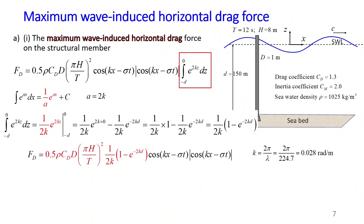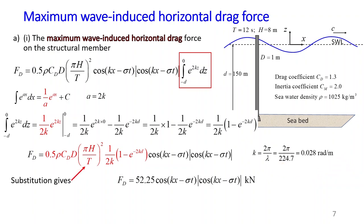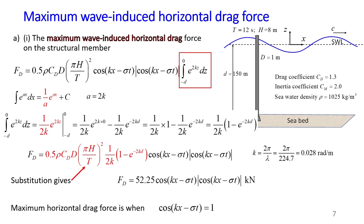We now substitute all constant values: drag coefficient, diameter, density, and so on. We also calculate the wave number k = 2π/λ. Therefore, our drag force equals 52.25 multiplied by cosine multiplied by cosine, in kilonewtons — or 52,250 newtons. The maximum wave-induced horizontal drag occurs when the cosine term equals 1. Therefore, the maximum wave-induced horizontal drag force is equal to 52.25 kilonewtons.